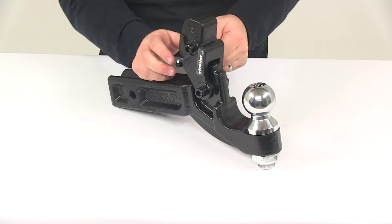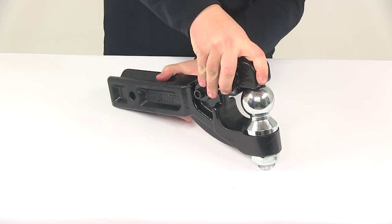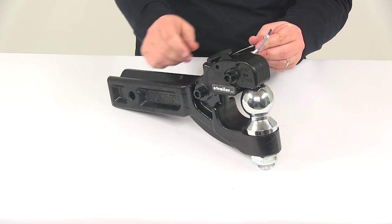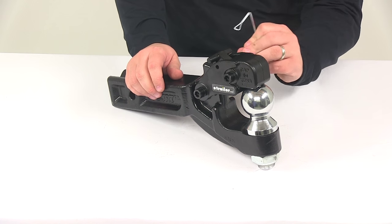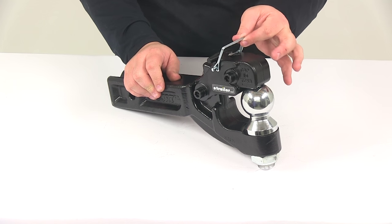To bring it back down, simply remove the pin, lift the unit back to where it sits on top of the hitch ball, and then always secure it in either position with that included safety pin.